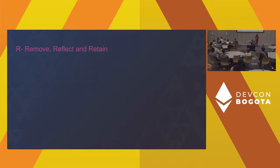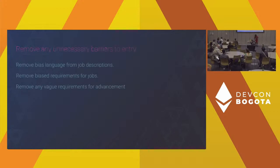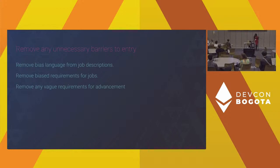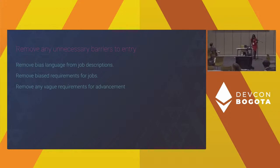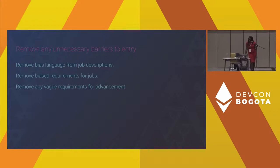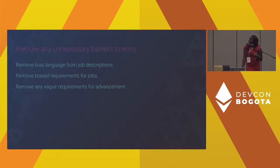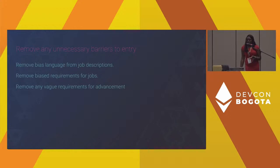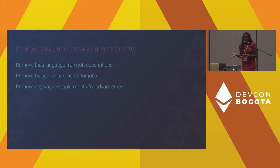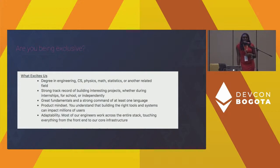Another step for being a hero is to Remove, Reflect, and Retain. Removing unnecessarily biased language from job descriptions is a big issue in both Web2 and Web3. This includes removing biased requirements like specific grade levels, degree backgrounds, location preferences, or vague requirements. For example, a previous hiring bar listed 'types slow' as a disqualifier — but that's poorly defined and irrelevant to engineering performance. You need to be very specific about what your actual requirements are for the roles.